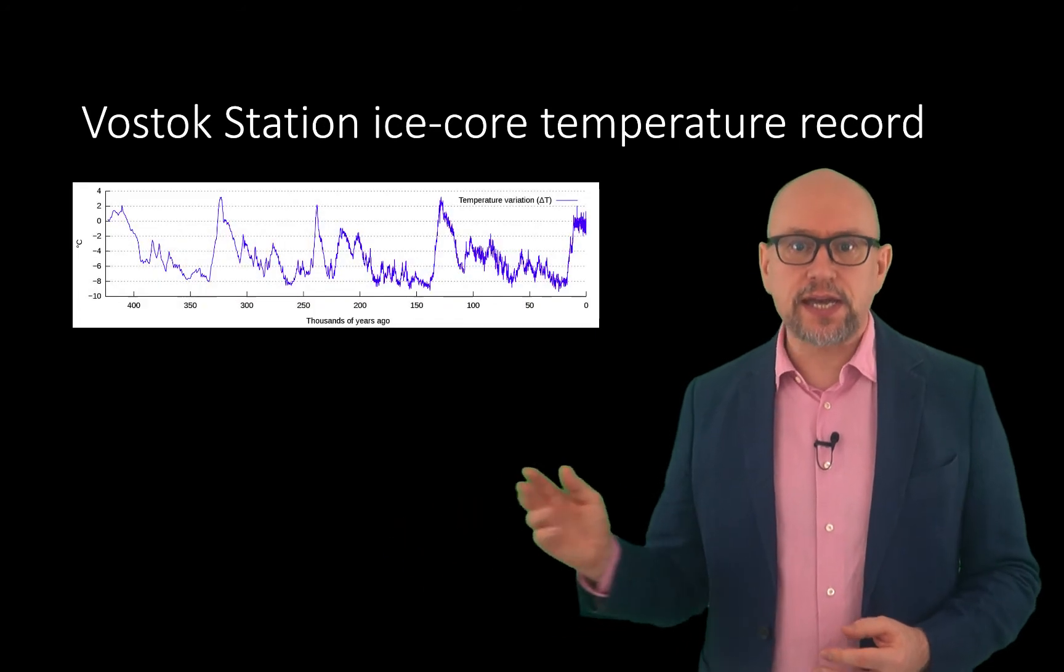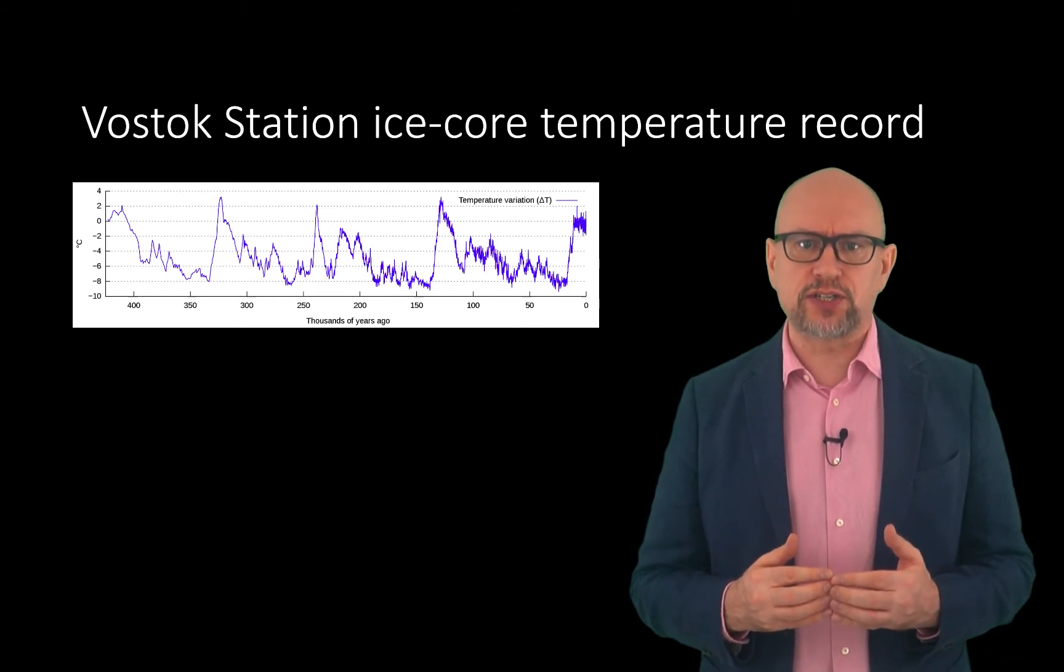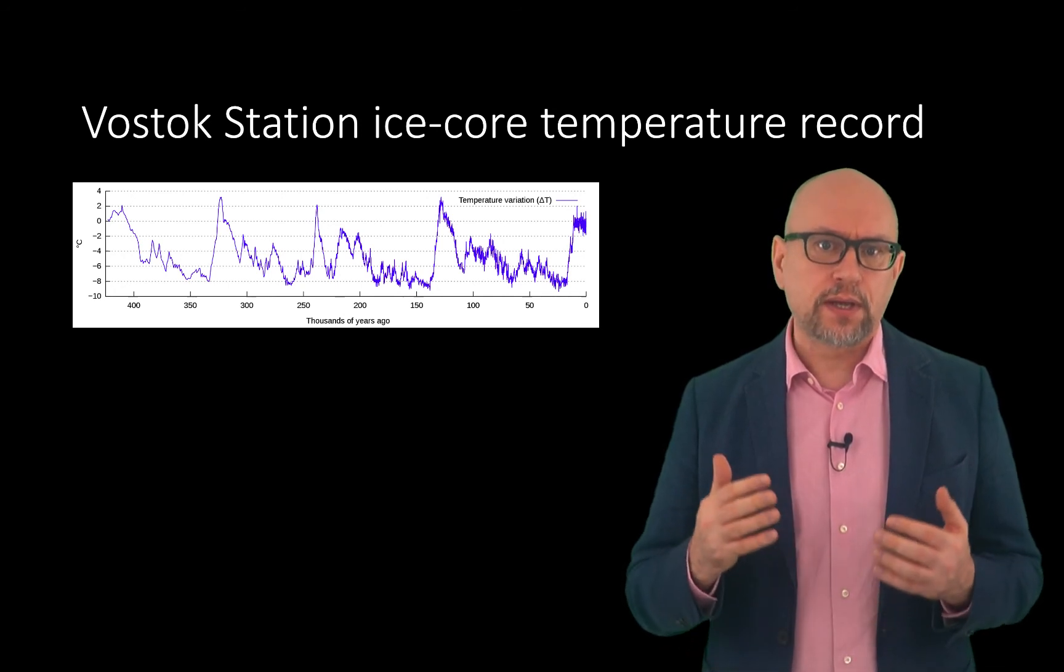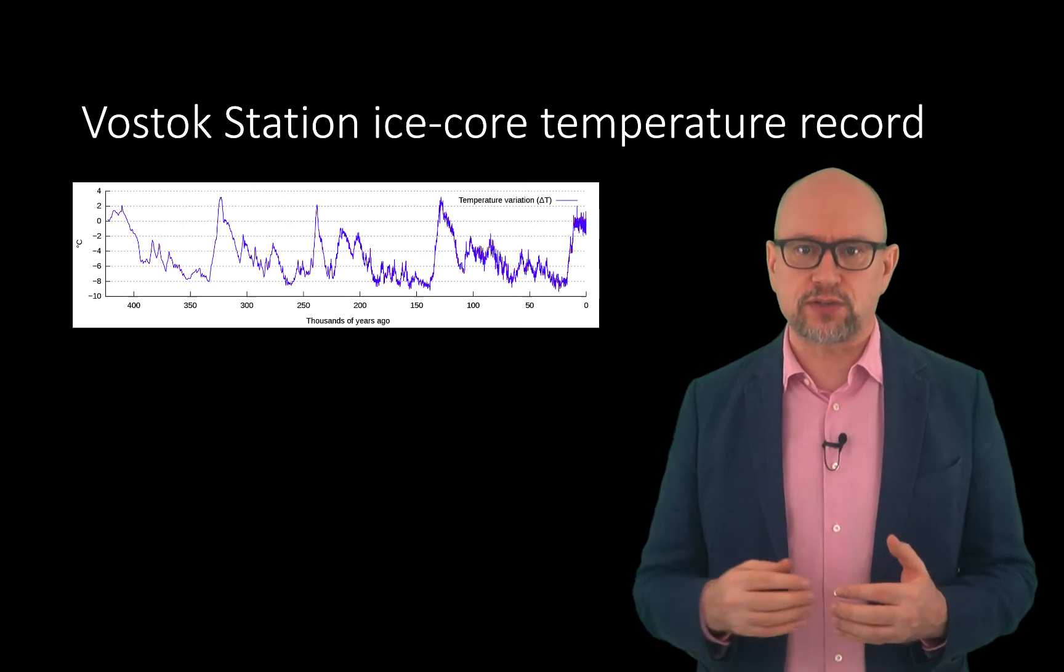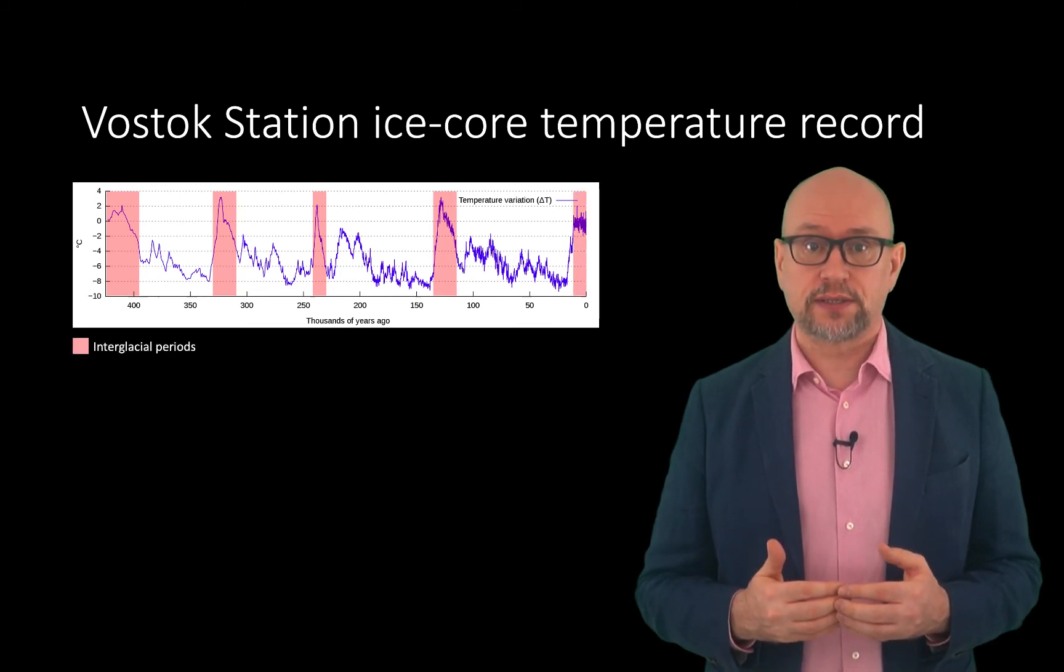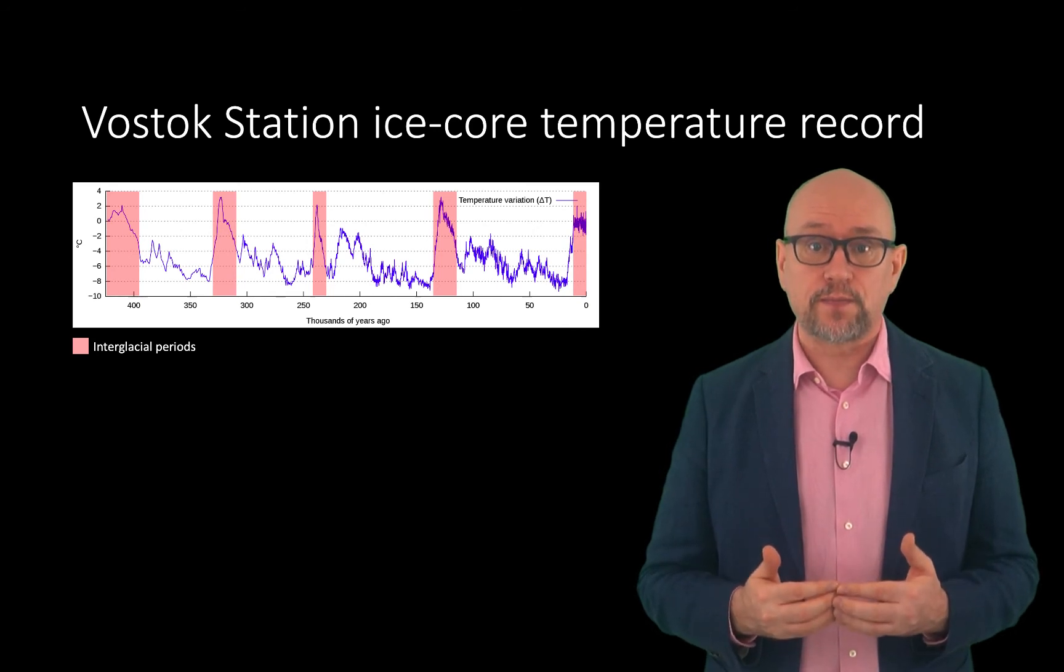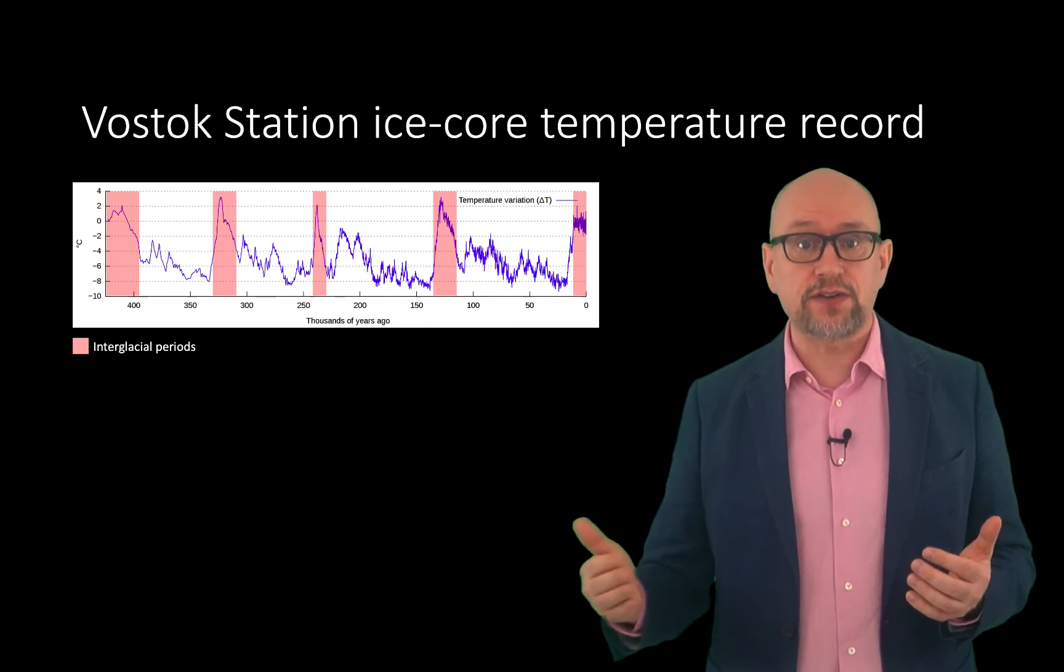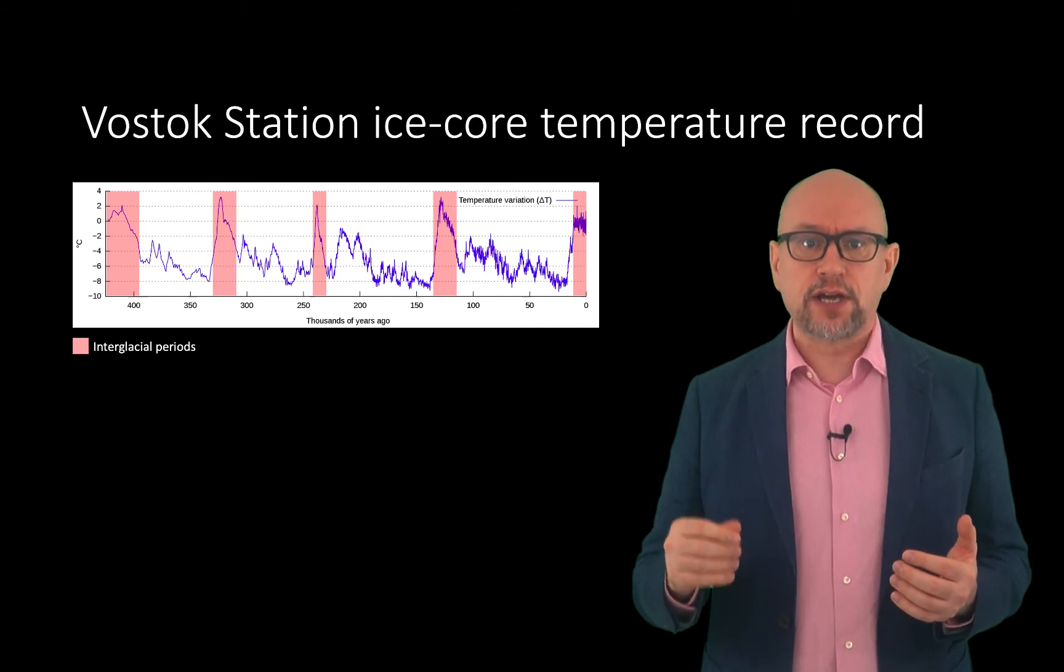The figure here shows the ice core temperature record from cores drilled at Vostok Station, a Soviet research station in Antarctica founded during the International Geophysical Year. This core enables the temperature to be reconstructed for the past 420,000 years. This record reveals past ice ages and interglacial periods. The last interglacial period ended about 120,000 years ago. Thereafter, we had an ice age that itself ended about 11,500 years ago. Since then, Earth has been in an interglacial period called the Holocene.